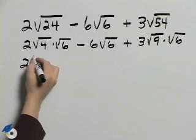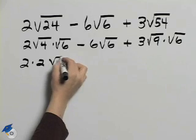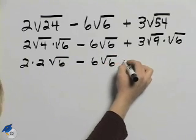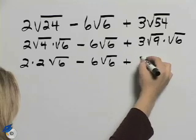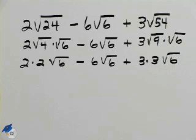Now simplifying, we'll have 2 times 2, square root of 4 is 2, times the square root of 6, minus 6 square root of 6, plus 3 times square root of 9 is 3, square root of 6.